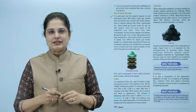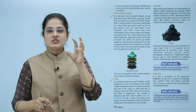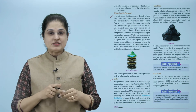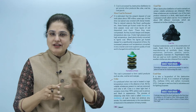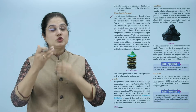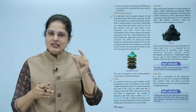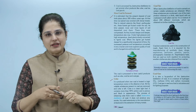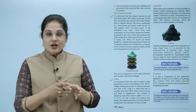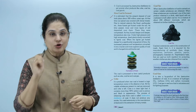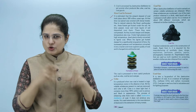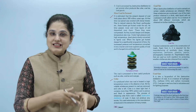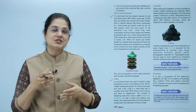Coal को process करके हमें useful products जैसे coke, coal tar और coal gas मिलते हैं। जब raw coal को बहुत ज़्यादा high temperature oven में air की absence में heat करते हैं, तब coal में present volatile substance हट जाता है, और जो पीछे बचता है वो है coke। Coke एक clean और light fuel है, इसमें 90% से ज़्यादा carbon है और यह porous और काला होता है। इस process को destructive distillation of coal कहते हैं। Coke से बहुत ज़्यादा धुआँ नहीं उठता, इसलिए इसको steel industry में और metal extraction industries में use किया जाता है।